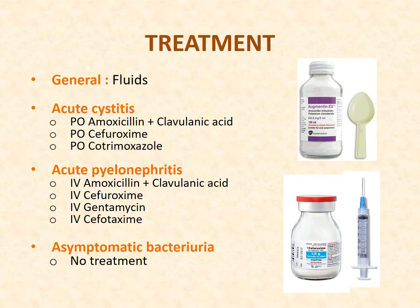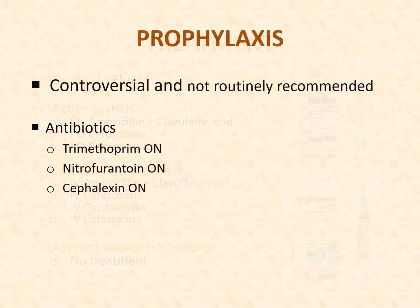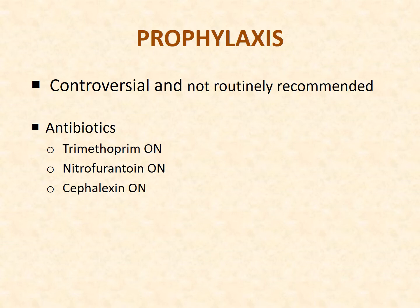When treating a child with urinary tract infection, it is important to ensure adequate hydration. If the child has vomiting or poor oral intake, intravenous fluids should be considered. Acute cystitis usually responds well to oral antibiotics; choices include amoxicillin plus clavulanic acid, cefuroxime, gentamicin, or cefotaxime. Asymptomatic bacteriuria does not require treatment. Antibiotic prophylaxis to prevent recurrence is controversial and not routinely recommended, but may be considered in young children with genitourinary tract abnormalities and recurrent UTIs. Prophylactic antibiotics include trimethoprim, nitrofurantoin, and cefalexin, given once daily at night.